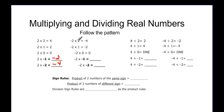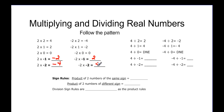If we have negative 2 times positive 2 it's negative 4, just like what we just found. Negative 2 times 1 is negative 2 — we found that one too in the opposite order. Negative 2 times 0 is 0. Negative 2 times negative 1 — this time we're adding 2 every time, so it should be positive 2. And negative 2 times negative 2 would be positive 4.